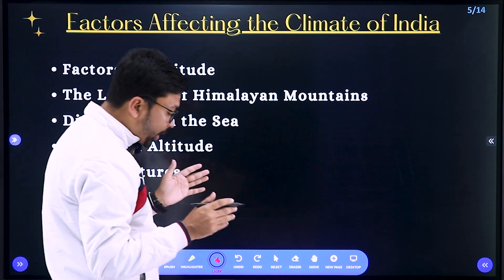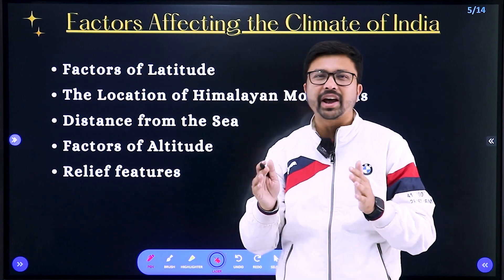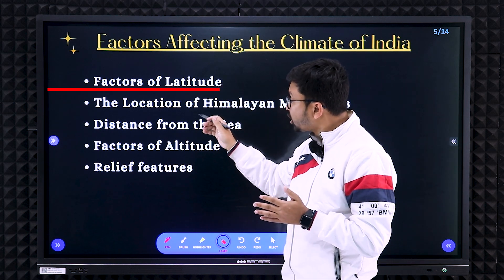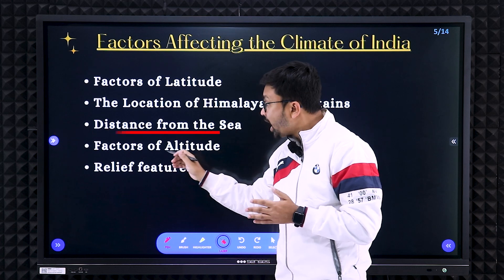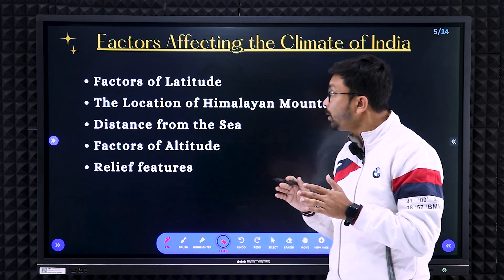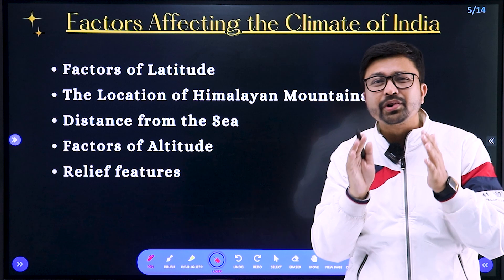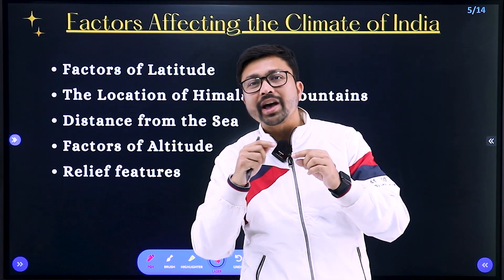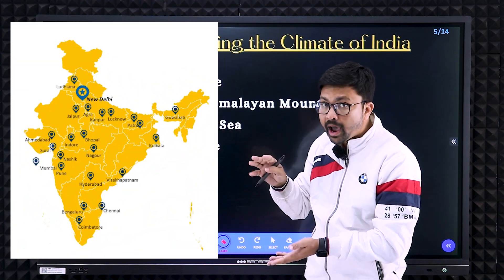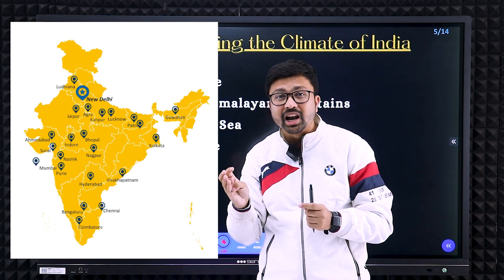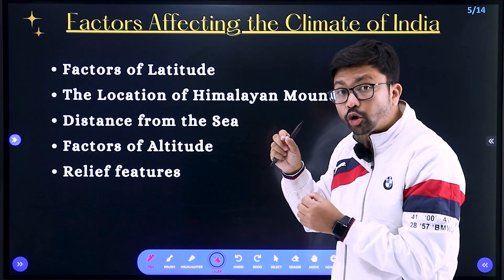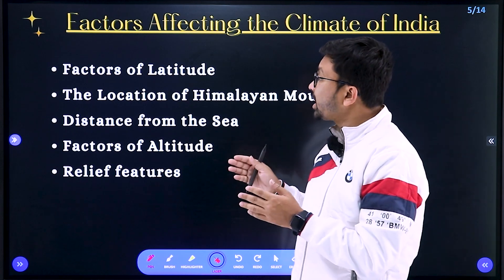Next, study the factors of Indian climatic conditions. These factors explain why climatic conditions vary in different parts of India. The factors are: latitudinal location, the Himalayan mountain, distance from the sea, altitude, and relief features. From this part, give-reason questions will be there. You need to remember the locations of main cities — Delhi, Mumbai, Kolkata, Chennai, Bangalore — on the India map to answer those questions easily.